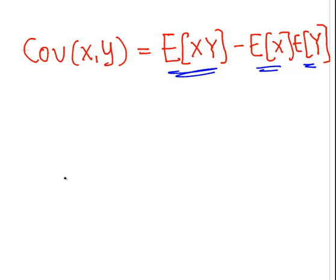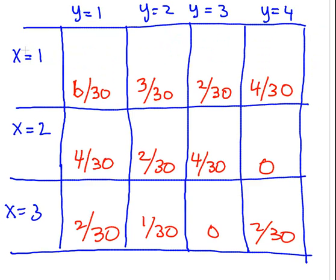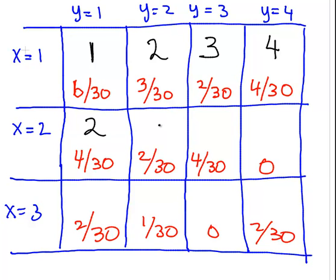Going back to the joint table, I'll compute the product xy for each cell. For x=1: xy = 1, 2, 3, 4. For x=2: xy = 2, 4, 6, 8. For x=3: xy = 3, 6, 9, 12. Note that 8 and 9 are impossible values — their probabilities are zero — so the possible outcomes of XY are 1, 2, 3, 4, 6, and 12.